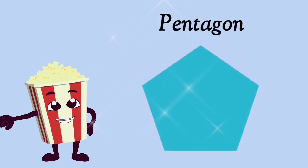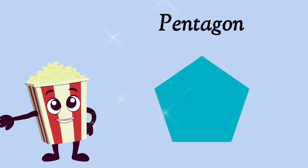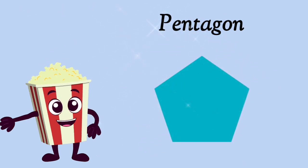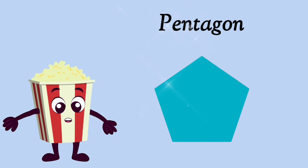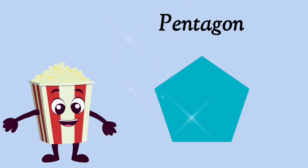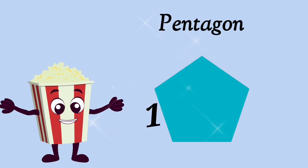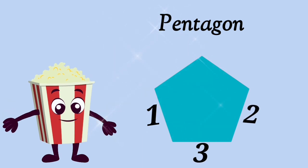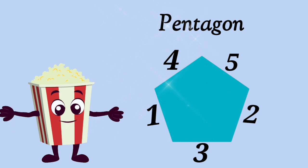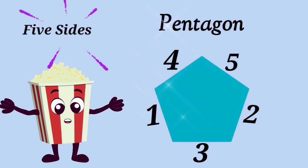This is a pentagon. How many sides does a pentagon have? 1, 2, 3, 4, 5. A pentagon has 5 sides.